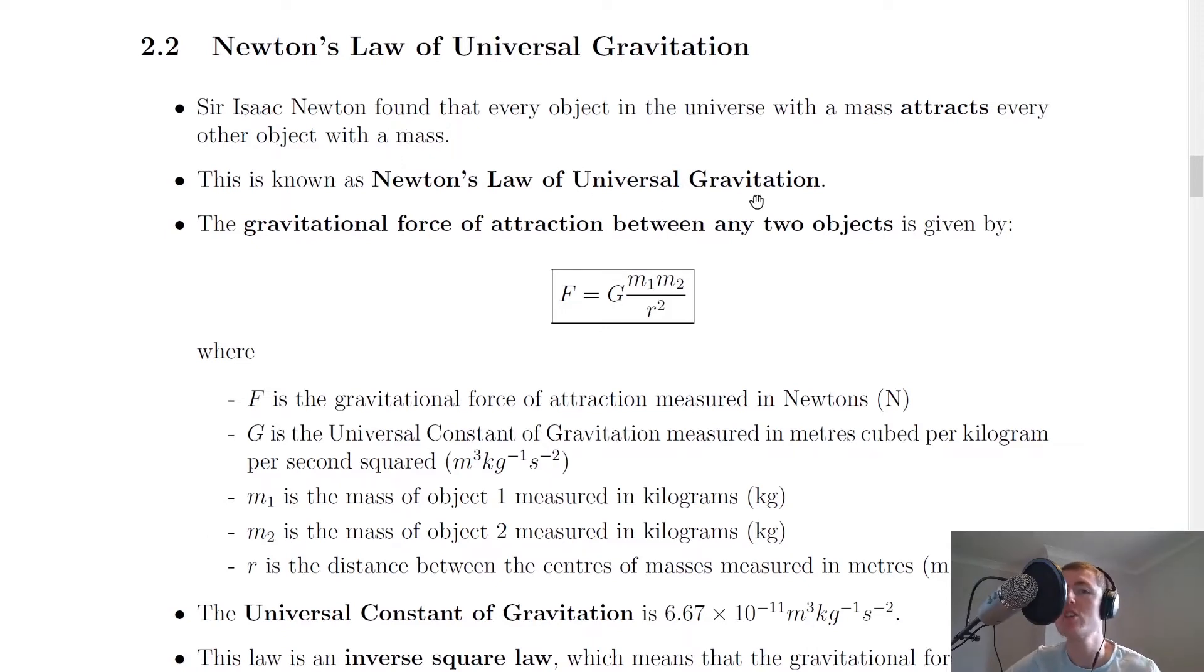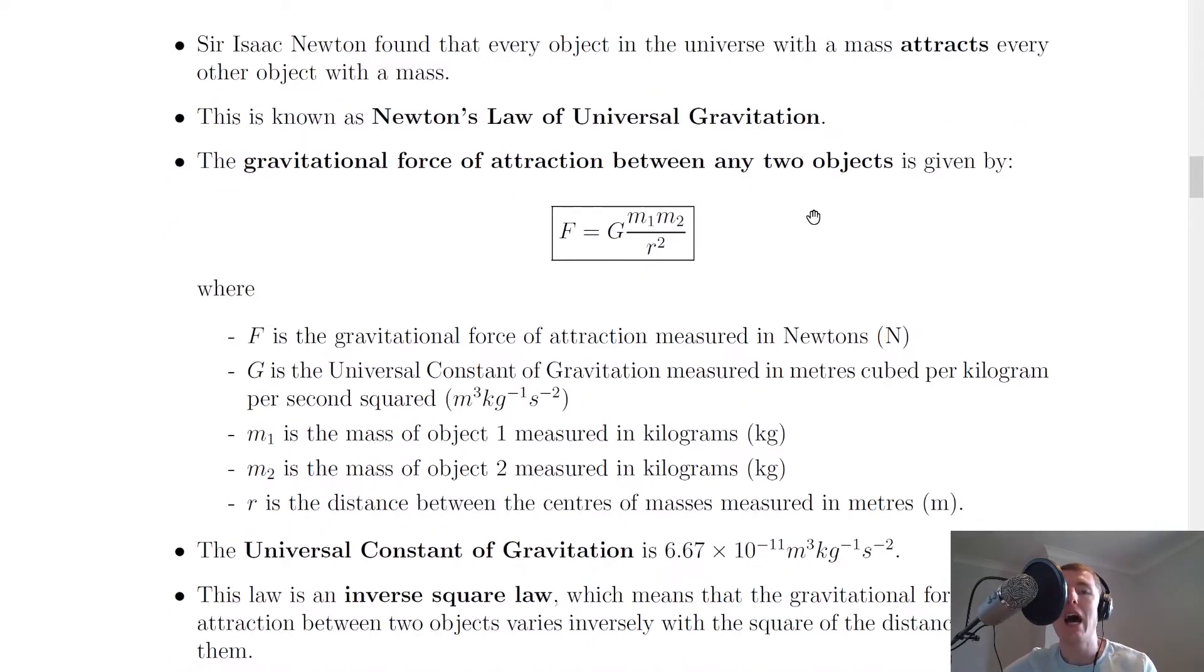This is known as Newton's Law of Universal Gravitation, and it basically describes the gravitational force of attraction between two objects. The gravitational force of attraction between any two objects is given by this equation: F equals G times m1 m2 over r squared.